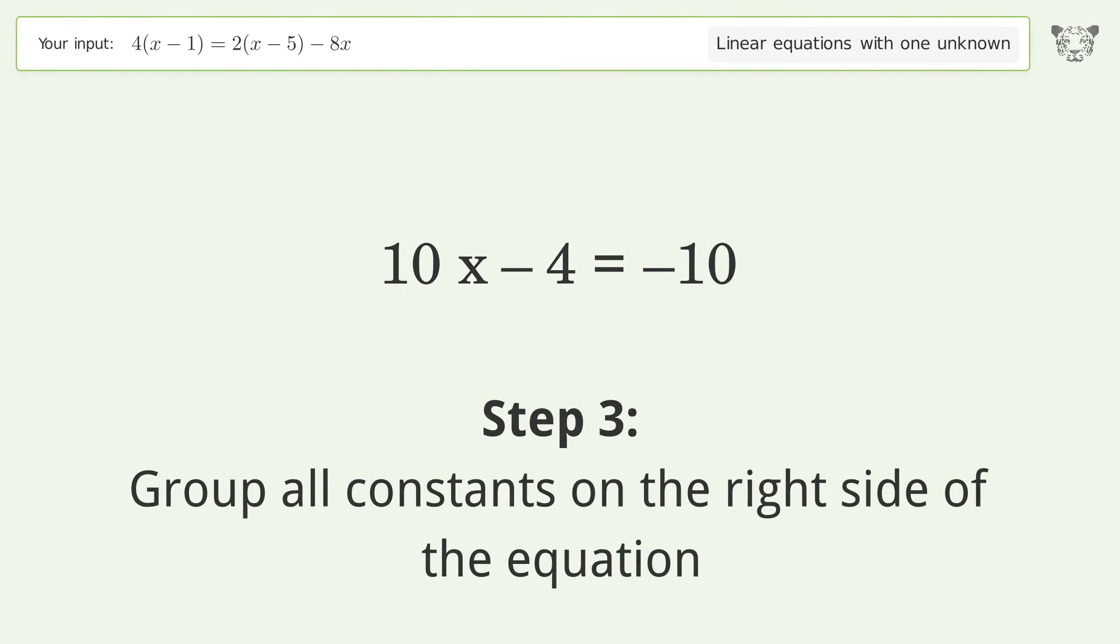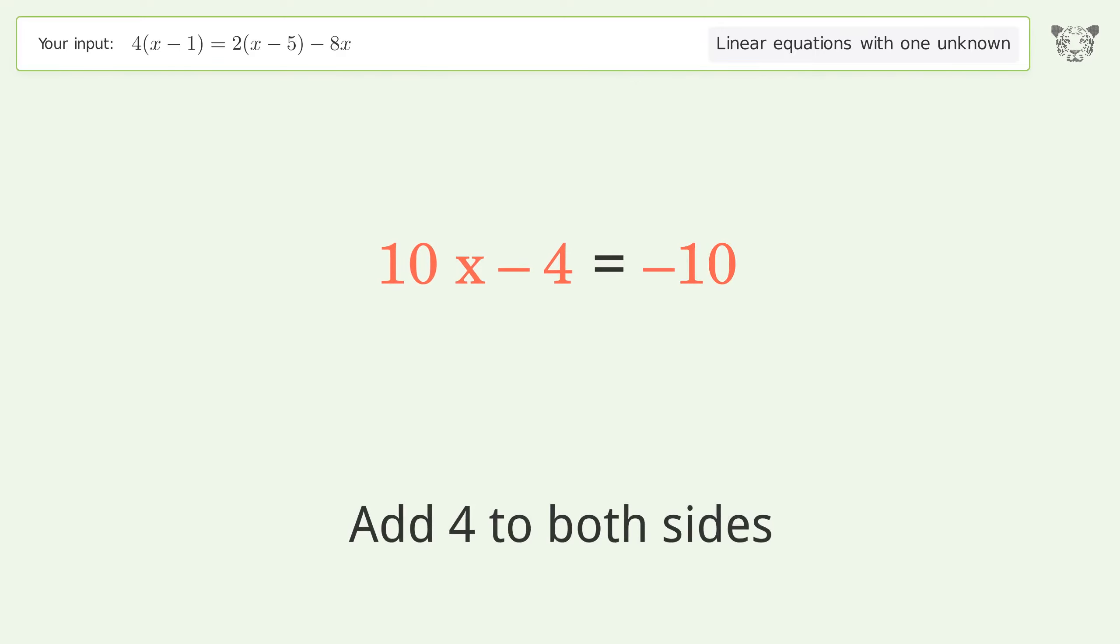Group like terms. Simplify the arithmetic. Group all constants on the right side of the equation. Add 4 to both sides. Simplify the arithmetic.